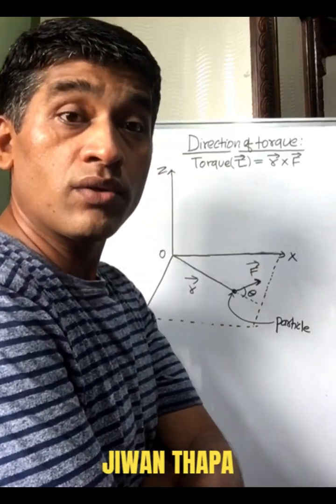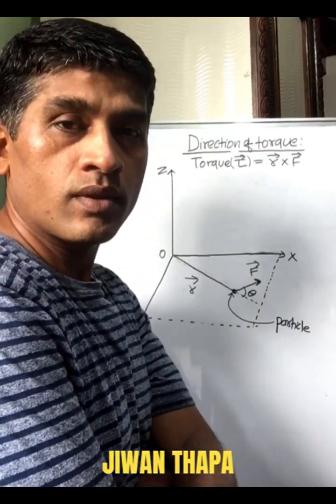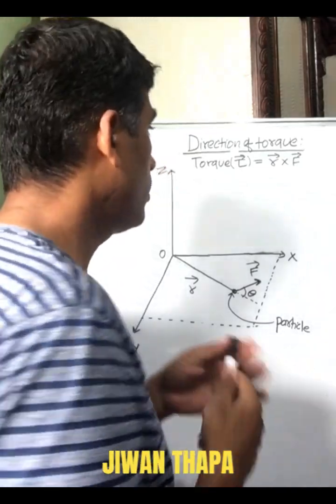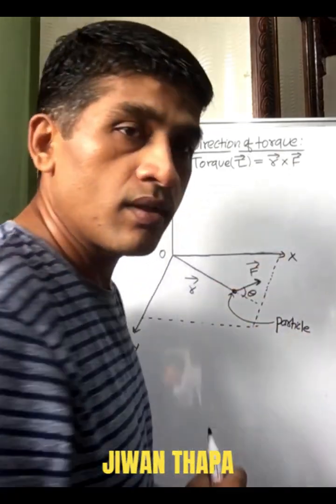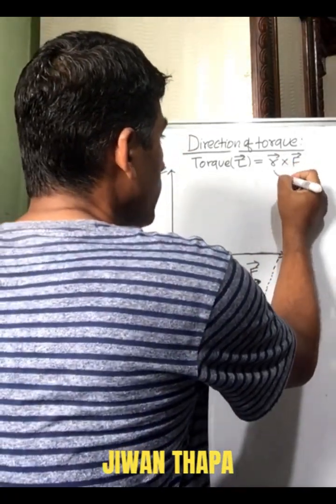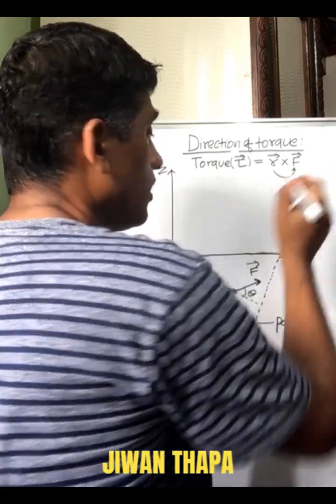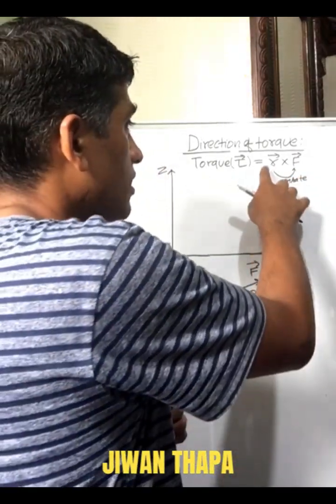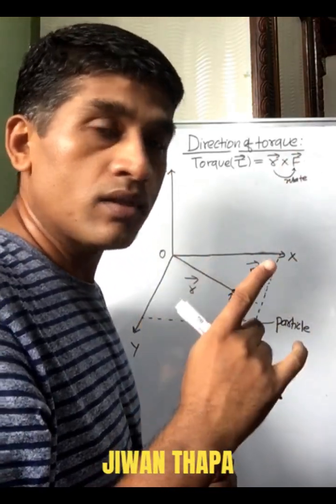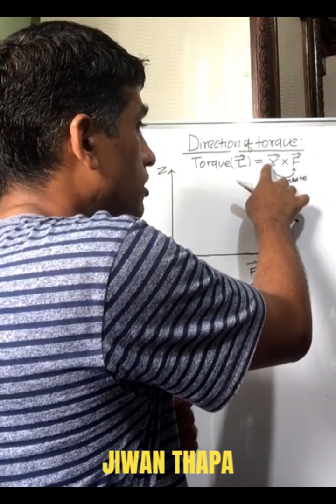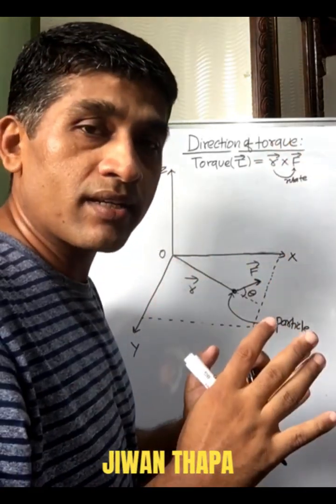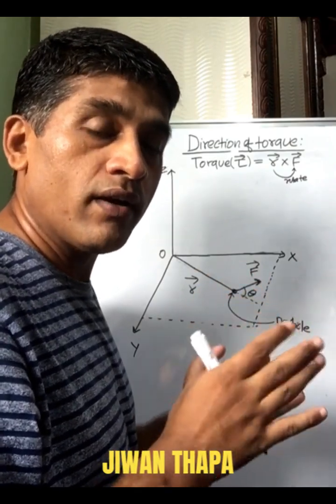Hello everyone, today we are going to discuss the direction of torque. We know torque tau is given by the cross product of position vector with force. In order to find the direction of torque, we rotate the first vector — that is the position vector — towards the second vector, that is force.